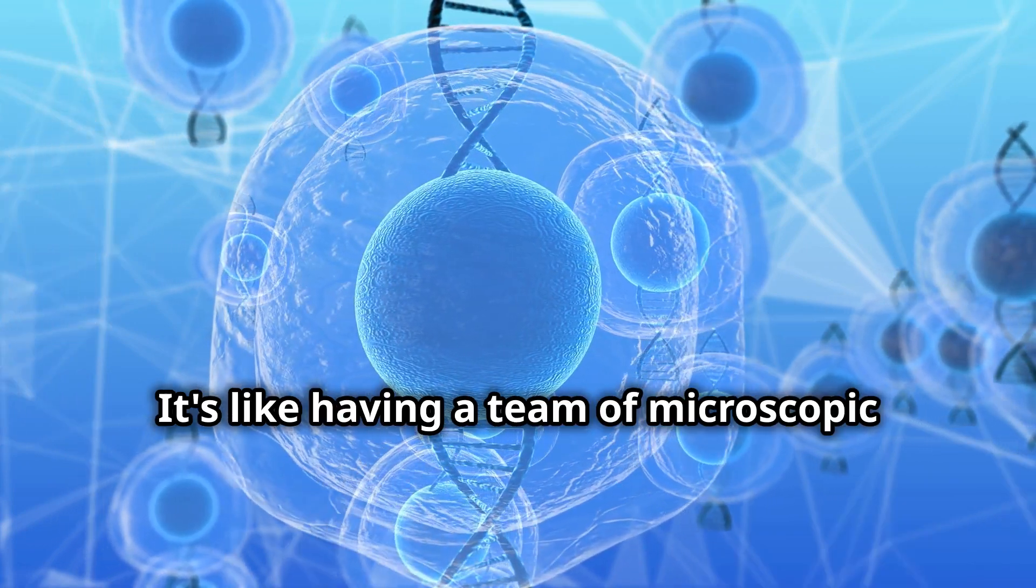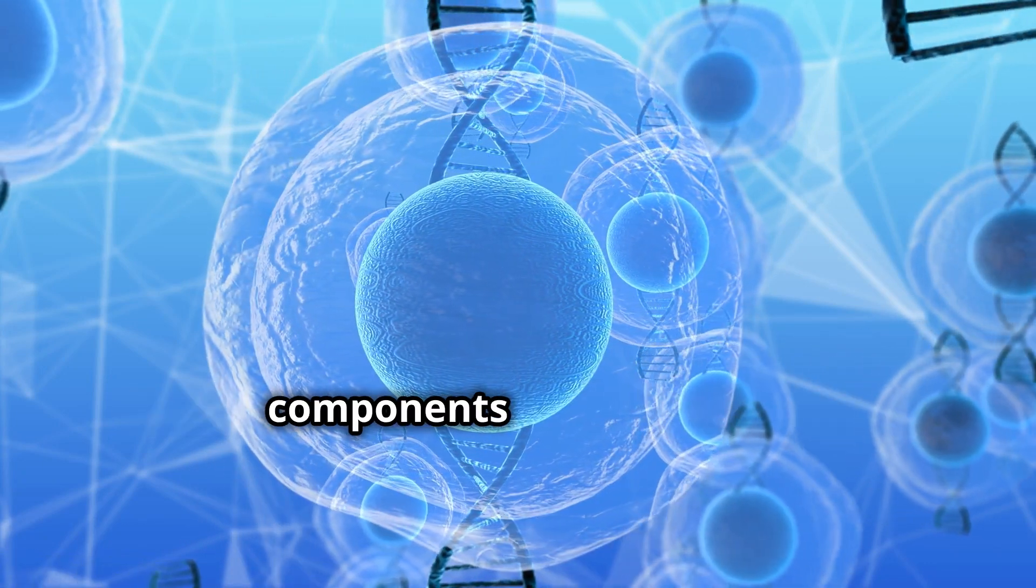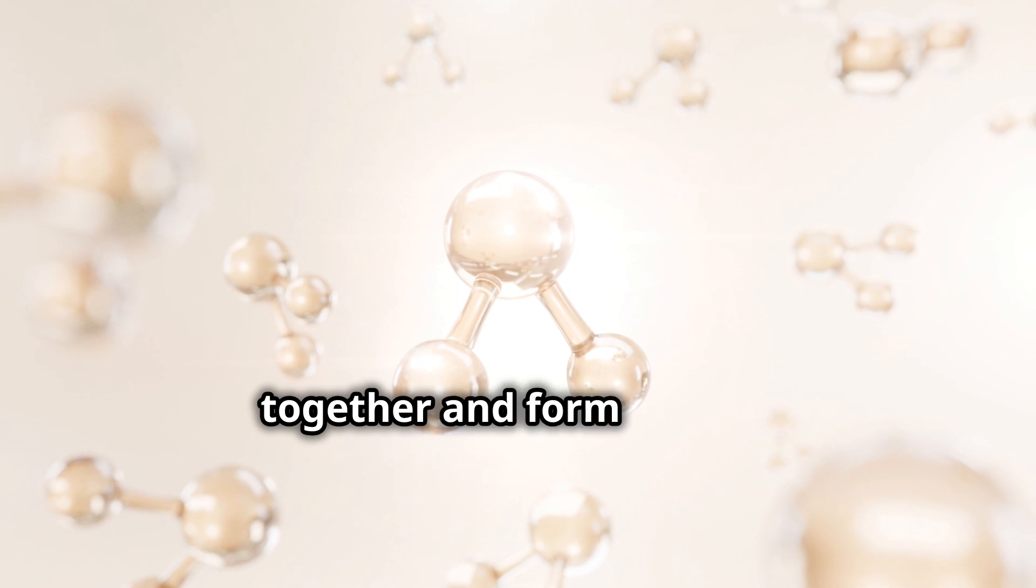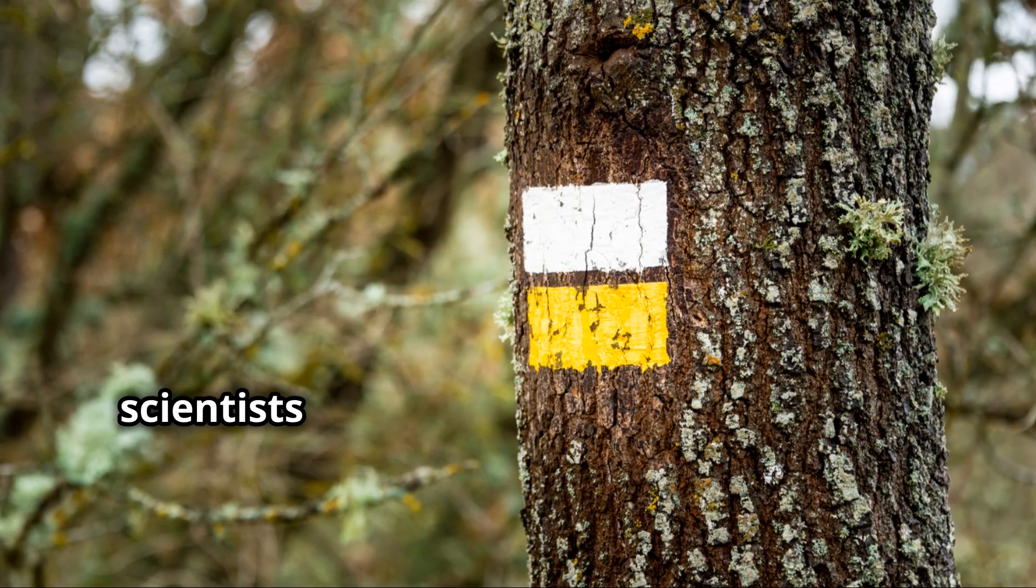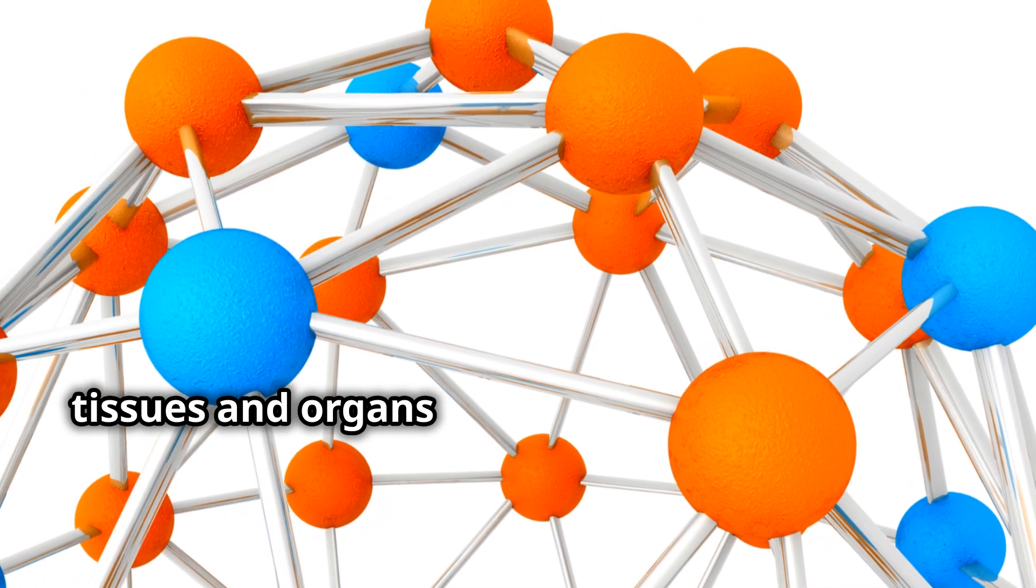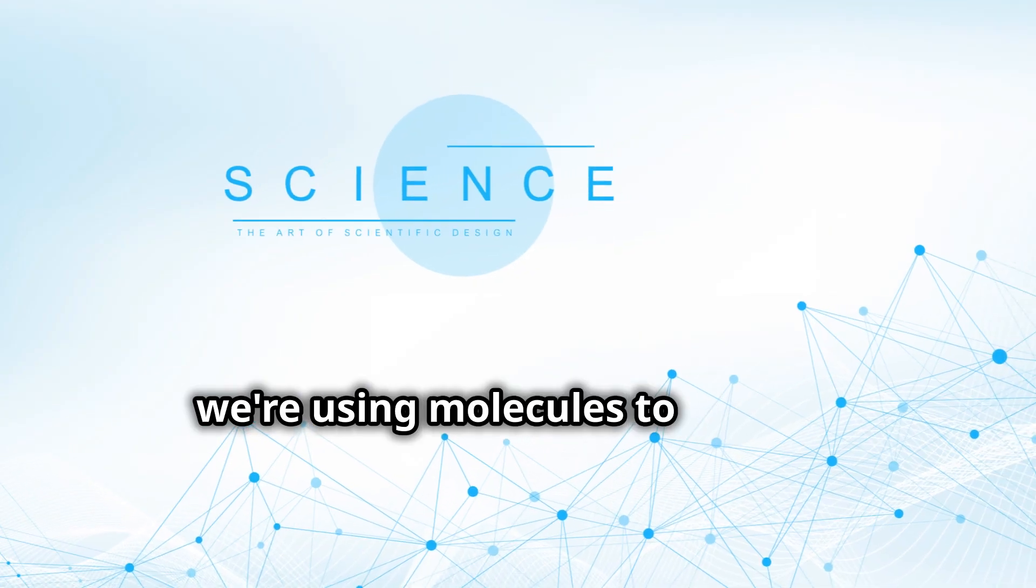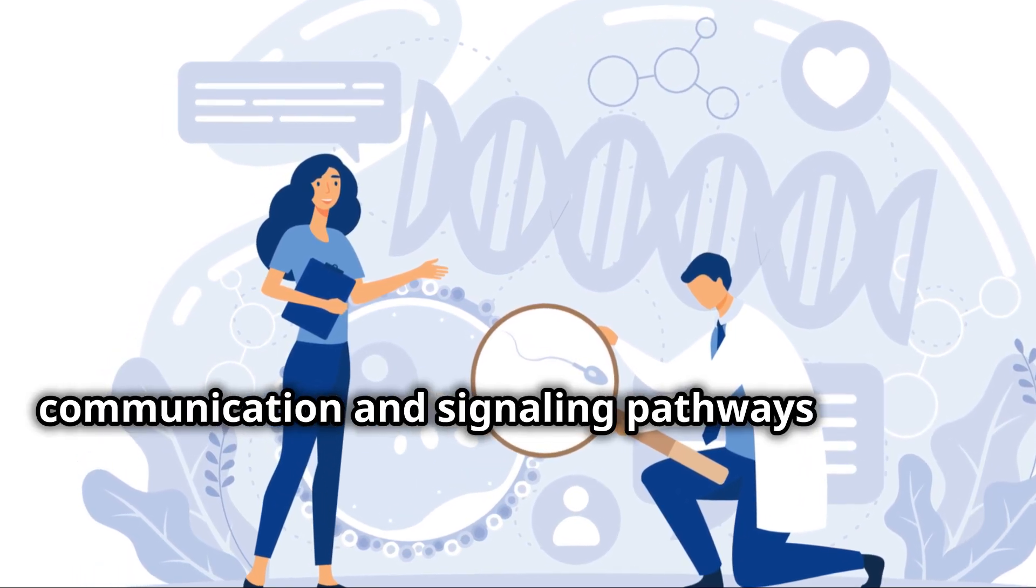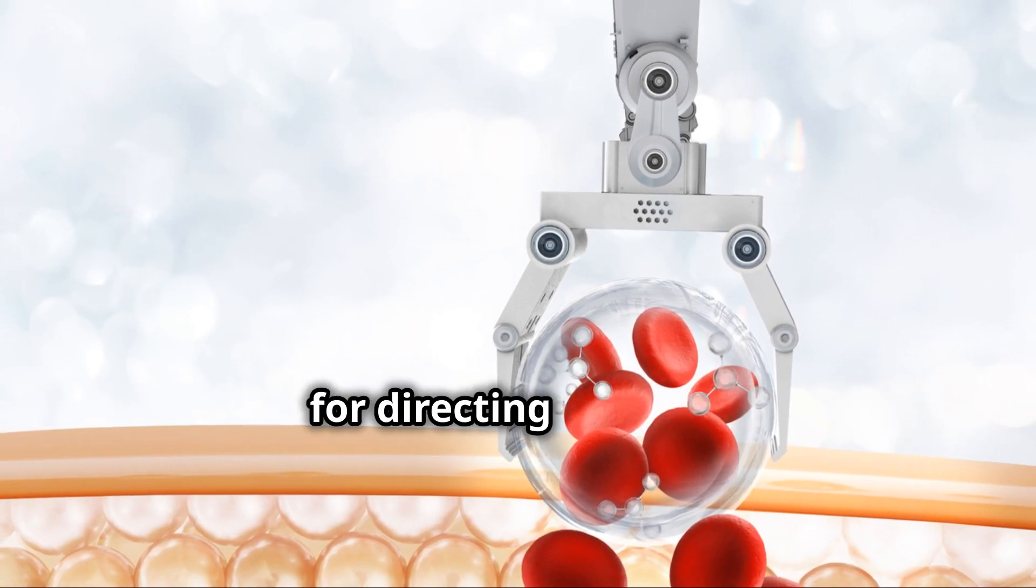It's like having a team of microscopic construction workers, each with a specialized skill set, working together to build the different components of the organ. One protein might be responsible for promoting cell division, while another encourages cells to bind together and form tissues. By carefully controlling the timing and concentration of these molecular cues, scientists can orchestrate a symphony of cellular activity, guiding the development of complex tissues and organs with remarkable precision. It's like composing a piece of music, but instead of notes, we're using molecules to create a masterpiece of cellular engineering. And as our understanding of cellular communication and signaling pathways deepens, so too will our ability to develop even more sophisticated and effective methods for directing cell fate. We're essentially learning to speak the language of cells, and in doing so, unlocking the incredible potential of regenerative medicine.